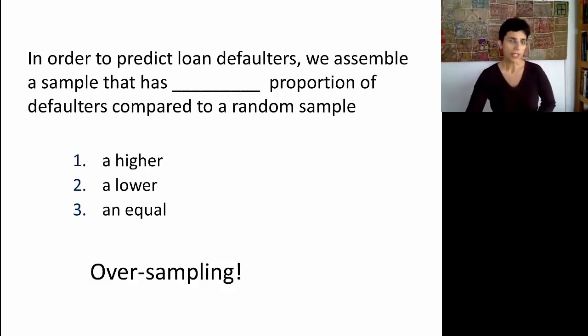The question is, how do we take into account the oversampling when we're evaluating the performance of the algorithm? We're training the algorithm on a data set that is different from what the data is going to look like at the time of deployment. One option is to take the cost metric that we talked about earlier and adjust it for oversampling.